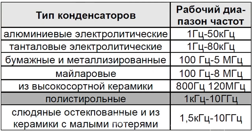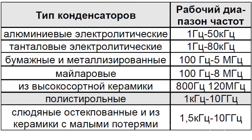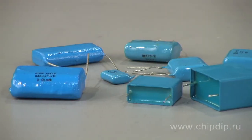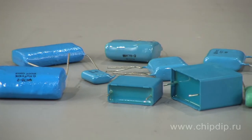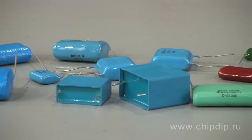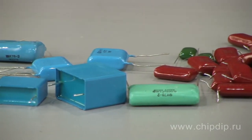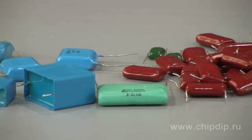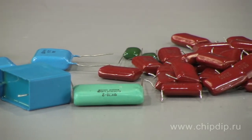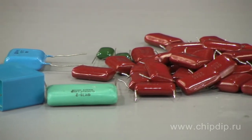Polystyrene capacitors have an extremely low series resistance and offer a very stable capacity-frequency characteristic. They are closer to an ideal capacitor than any other capacitor type. Generally, they are used for bypassing, filtering, and isolation, or in timing and noise damping circuits.